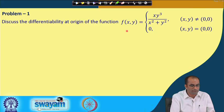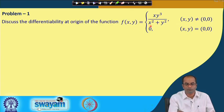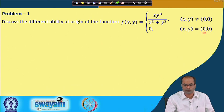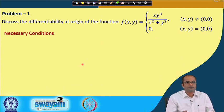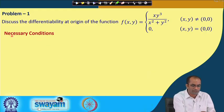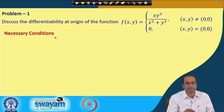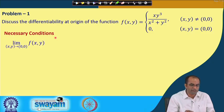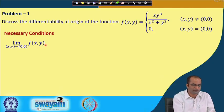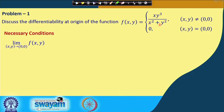Let us discuss the differentiability at the origin of the function f(x,y) = xy³/(x²+y²), with f(0,0) = 0. First we check the necessary conditions, which the function must satisfy before testing differentiability. For continuity, as (x,y) → (0,0) we change to polar coordinates: the denominator gives r², the numerator gives r⁴, leaving r² in the numerator. So the limit of f(x,y) as (x,y) → (0,0) equals 0.